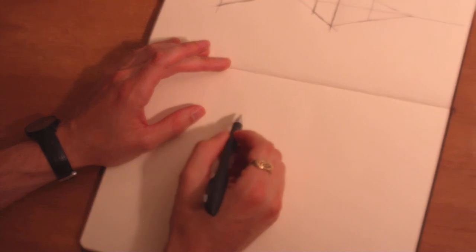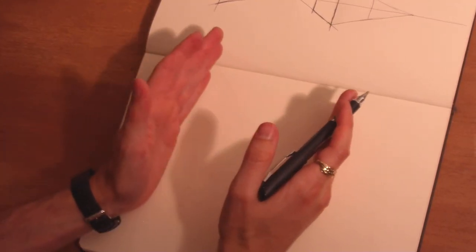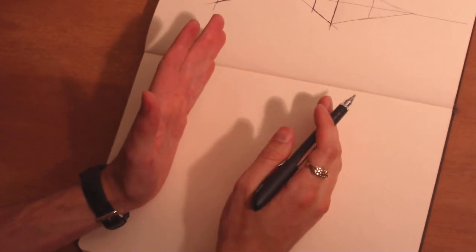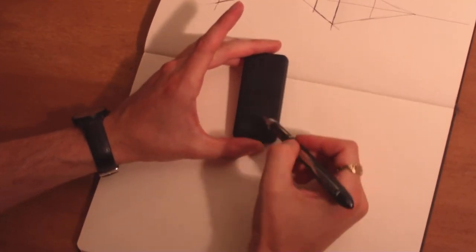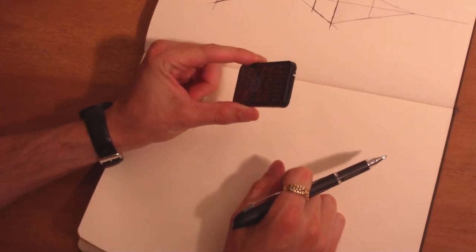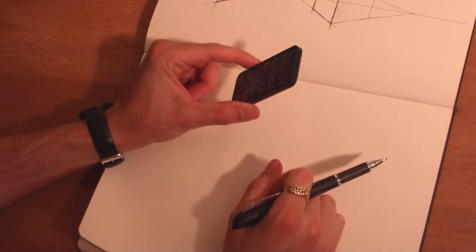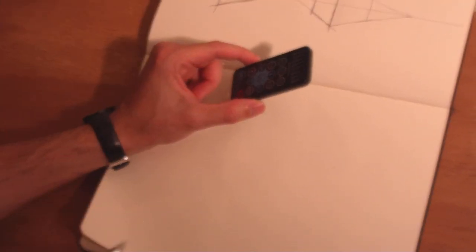And the basic rule of that is that if you're dealing with a right angle figure, such as this, when it recedes in space, you can see here that at any given point, the lines that are receding are going to eventually come to a vanishing point.